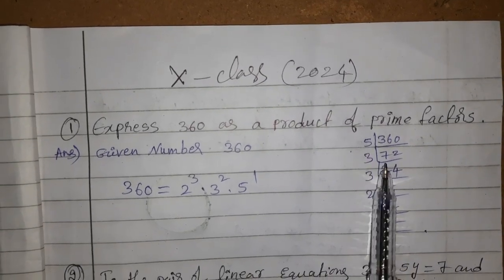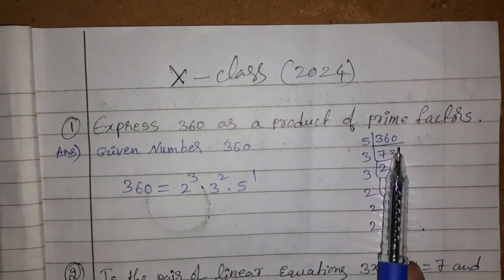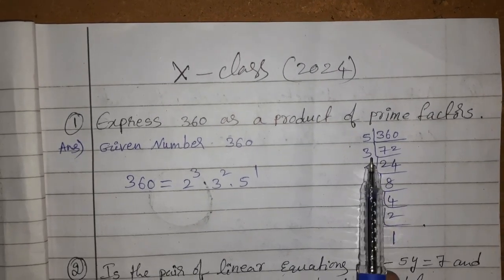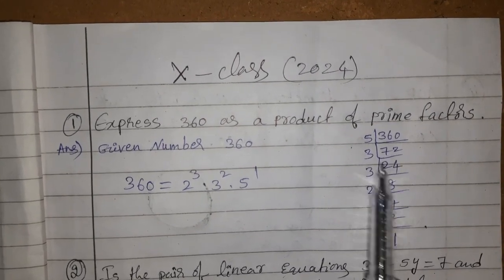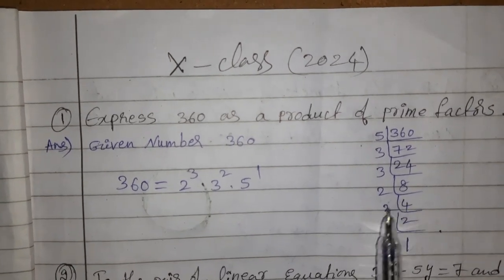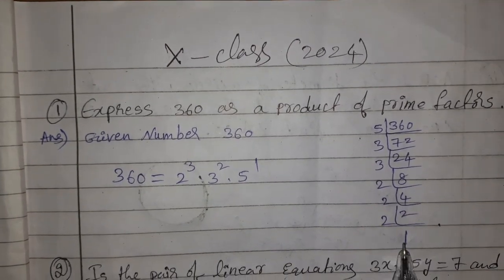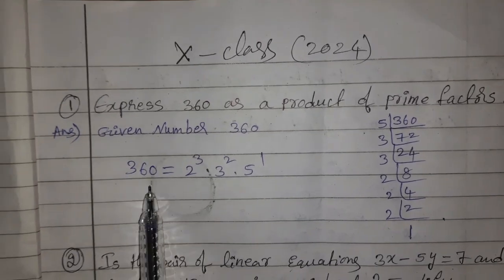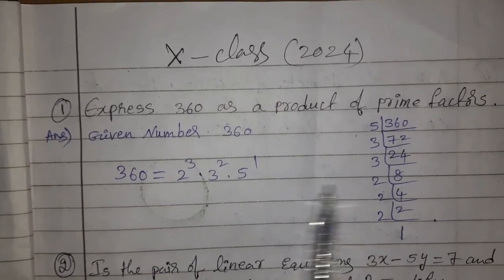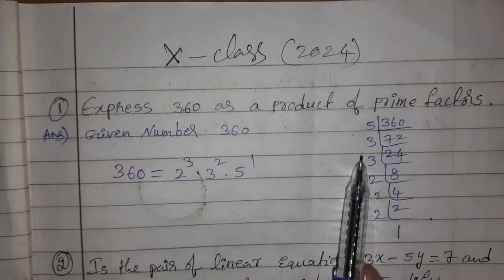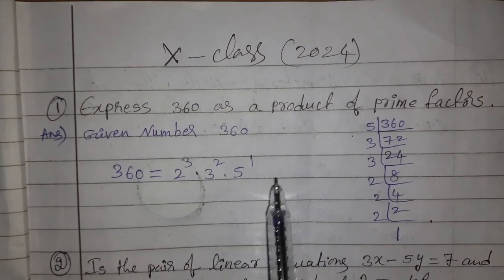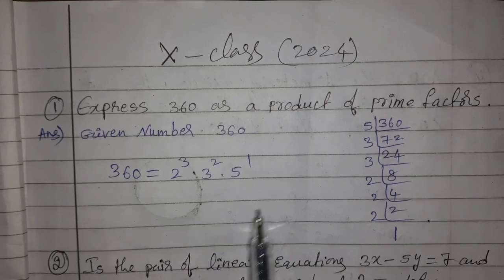First taking 5: 360 ÷ 5 = 72. Then taking 3: 72 ÷ 3 = 24, 24 ÷ 3 = 8, then 8 ÷ 2 = 4, 4 ÷ 2 = 2, 2 ÷ 2 = 1. So 360 = 2³ × 3² × 5. That is the final answer.